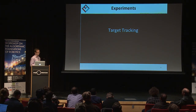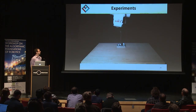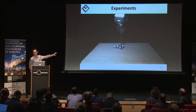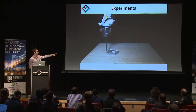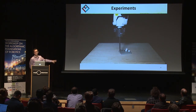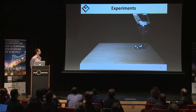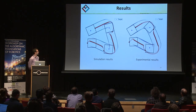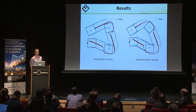We implemented a target tracking application. We have four predefined targets, and when it reaches the first target within a tolerance of one centimeter, it goes on to tracking the next one. These are the simulation results compared to the experimental results, and in blue those are the targets you were trying to track.